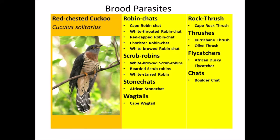The Red-chested Cuckoo is well known for its call. Hosts include members of the robin family — robin chats such as the cape robin chat, white-throated robin chat, red-capped or natal robin chat, chorister robin chat, and white-browed robin chat. Also scrub robins including the white-browed and bearded scrub robin, the white-starred robin, the African stonechat, wagtails such as the cape wagtail, rock thrushes such as the cape rock thrush, the olive and kurrichane thrushes, the African dusky flycatcher, and the boulder chat.